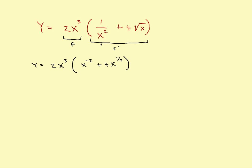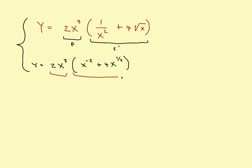As we've done before, first get rid of the radicals and get the variable out of the denominator. Now at this point, this is not the derivative — all I've done is just rewrite it. Now I'm going to take the derivative of this. This is my first function and this is my second function.